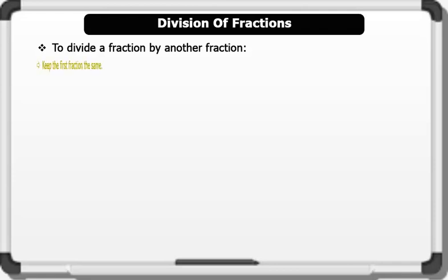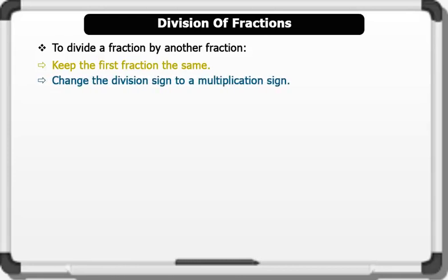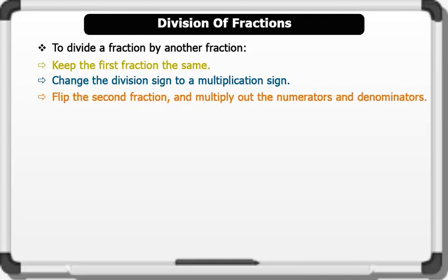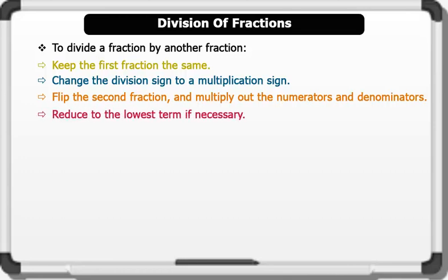Division of fractions. To divide a fraction by another fraction, we keep the first fraction the same, change the division sign to a multiplication sign, flip the second fraction, then multiply out the numerators and denominators. Reduce to the lowest term if necessary.